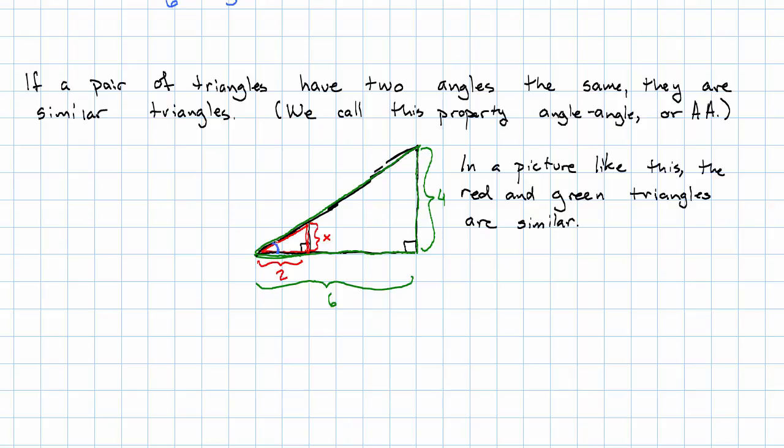So I'm going to set up this inside ratio first because I want the x on top. I've got x over 2. The side that corresponds to the x is 4 long. The side that corresponds to the 2 is 6 long.